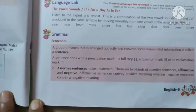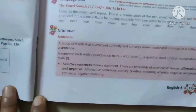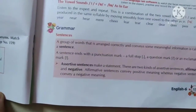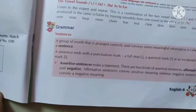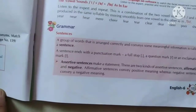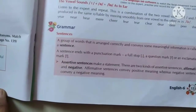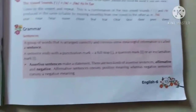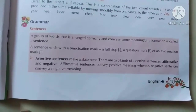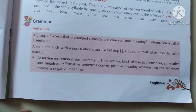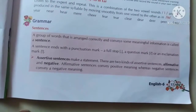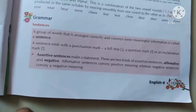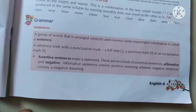There we have the sentences. We all know that a group of words that are arranged correctly, aur jo humloh ko kuchh meaningful information deta ho, usko sentences bola jata hai. A sentence always ends with a punctuation mark — a full stop, a question mark, or an exclamation mark.